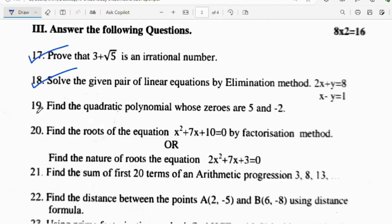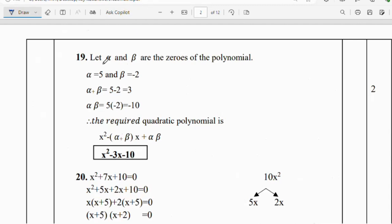Question number 19: Find the quadratic polynomial whose zeros are 5 and minus 2. Here they are given zeros of the polynomial 5 and minus 2. We have to find the quadratic polynomial. Alpha equals 5, beta equals minus 2. Alpha plus beta equals 3, alpha beta equals minus 10. The required quadratic polynomial is x² minus (α + β)x plus αβ. So x² minus 3x minus 10.